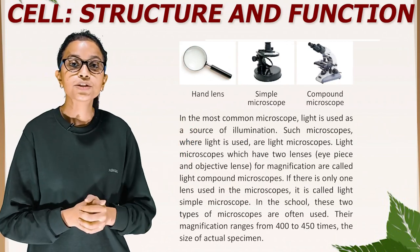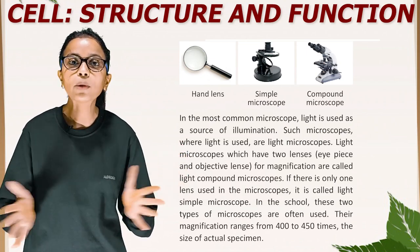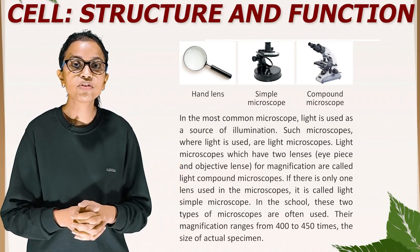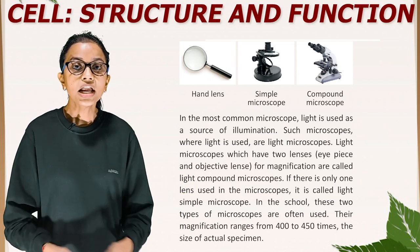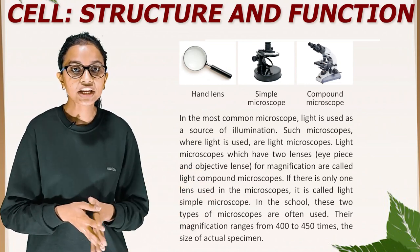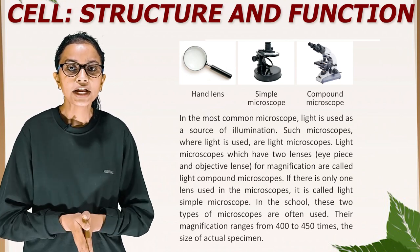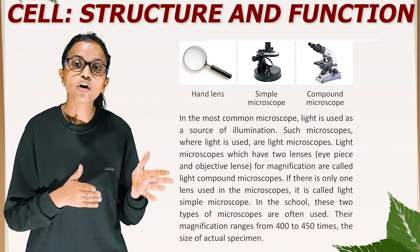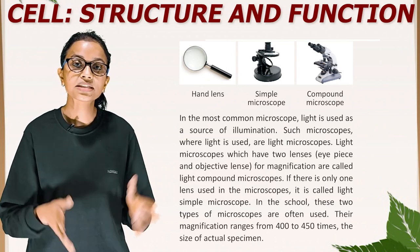Students, these are some pictures. The first picture is of a hand lens, the second one is a simple microscope, and the third one is a compound microscope. In the most common microscope, light is used as a source of illumination. Such microscopes where light is used are called light microscopes. Light microscopes have two lenses — an eyepiece and objective lenses — and are called light compound microscopes. If there is only one lens used in the microscope, it is called a light simple microscope. In schools, these two types of microscopes are often used. Their magnification ranges from 400 to 450 times the size of the actual specimen.